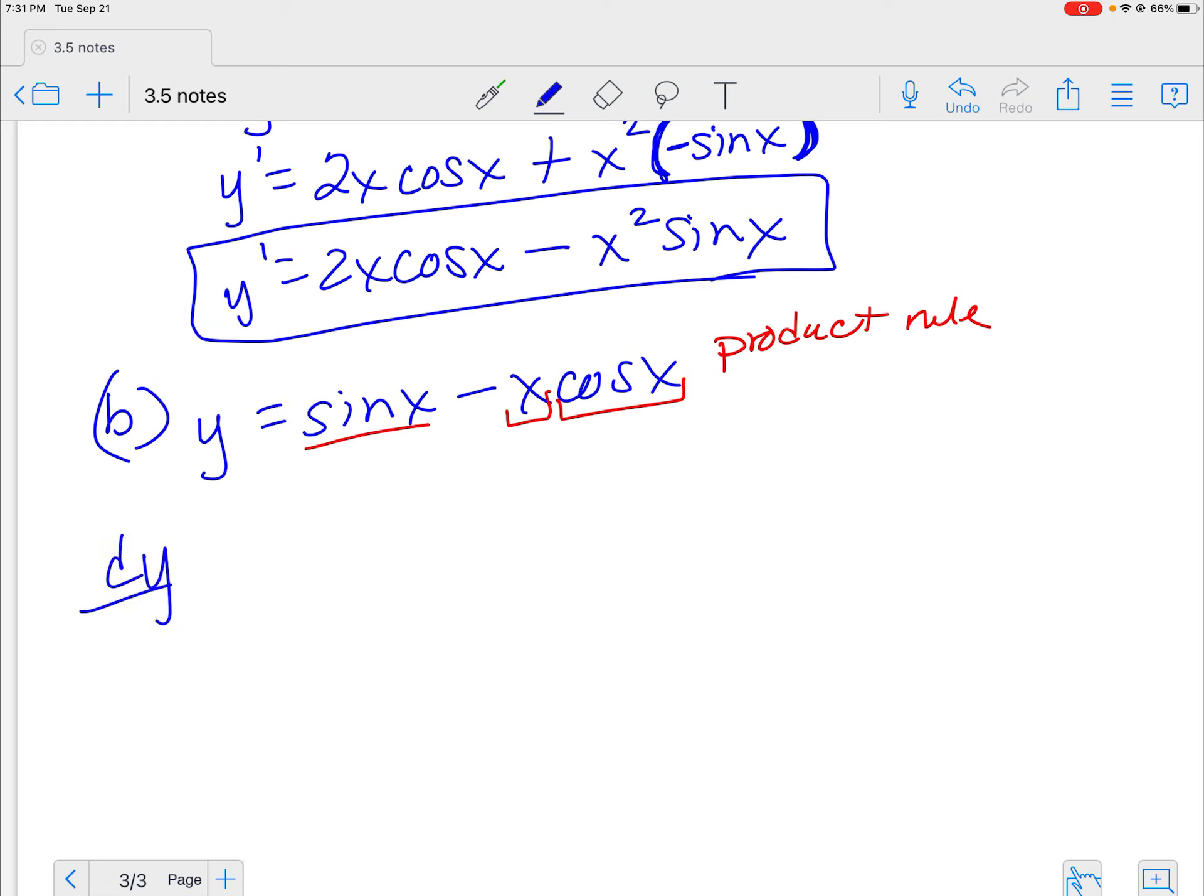Y prime, or let's do dy dx. Put some new notation in here. So the derivative of sine is cosine. Learn it. Love it. It's going to stick around with us forever. Now I do the product rule. So the derivative of the first term is just one times the second plus the first times the derivative of the second. So the derivative of cosine is negative sine of x.